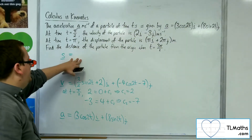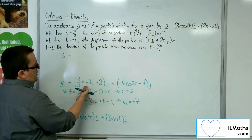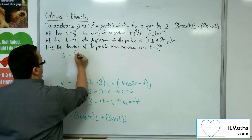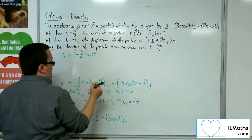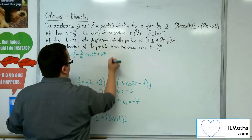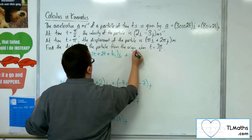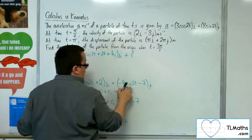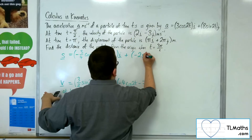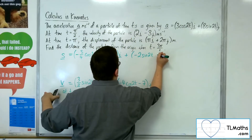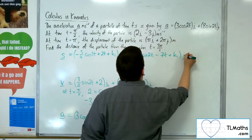Now I want to get to the displacement, so I need to integrate again. Sine integrates to minus cosine, so I'm going to get minus 3/4 cosine 2t, plus another constant of integration k1, for the i component. Minus cosine integrates to minus sine, so we get minus 2 sine 2t. The minus 7 integrates to minus 7t, plus another constant of integration k2, for the j component.